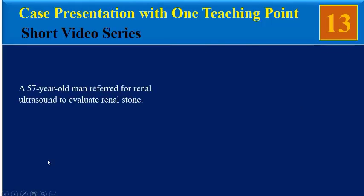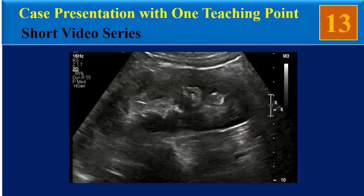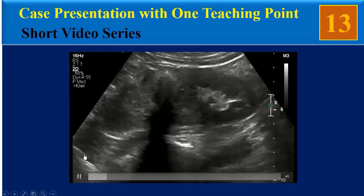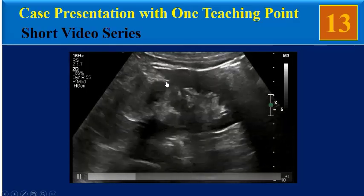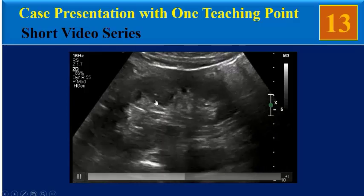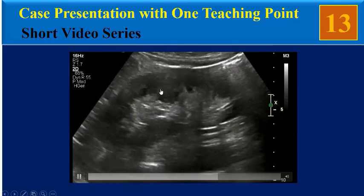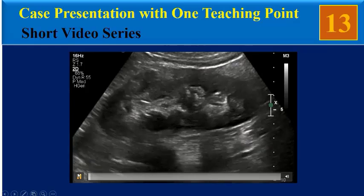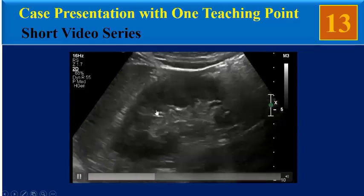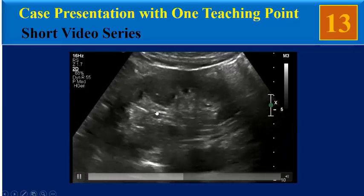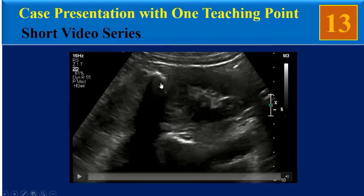A 59-year-old man was referred for renal ultrasound to evaluate renal stone. As you can see in this clip, we found a linear calcification with clean posterior shadowing, highly resembling a renal stone. But if you pay attention to the clip again, it is not in a caliceal system and shows a peripheral intraparenchymal location with extension to the perinephric space. So it is not a renal stone; it is an entity that mimics a renal stone.